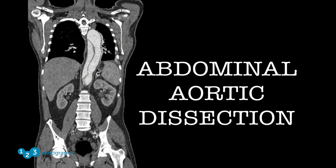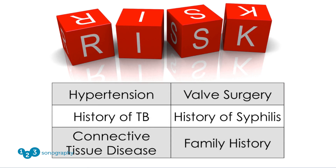Now let's talk about aortic dissection. Typically this tends to be a thoracic pathology, but there are cases where it can be seen in the abdominal cavity. Risk factors for this disease include hypertension, previous cardiac valvular surgery, a history of tuberculosis or syphilis, connective tissue disorders such as Marfan syndrome, or a family history of aortic dissection.